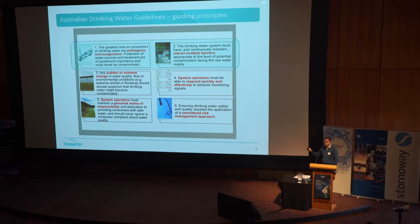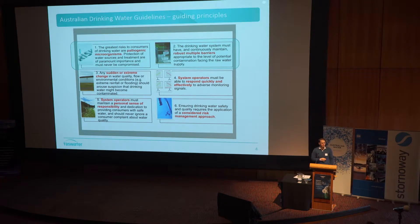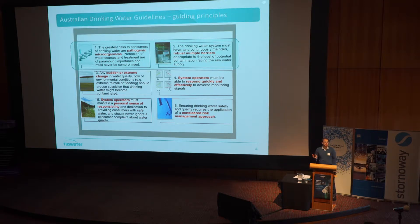Before I get into anything, I'm going to focus only on pathogens today. It does mean that we're not looking at other things in our catchments, but today we'll just focus on pathogens. The reason why — these are some of the guiding principles from the Australian drinking water guidelines. The first one is pathogenic microorganisms are the most important risk for our consumers; they're the biggest risk from drinking water. The second one is we need robust multiple barriers directly linked to the risk posed by those pathogens.